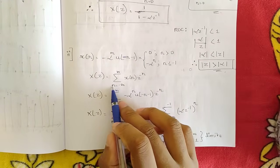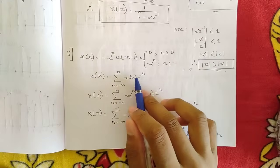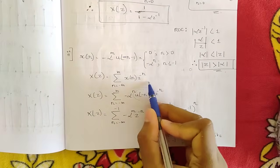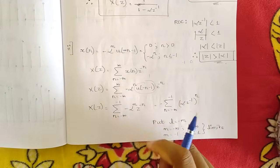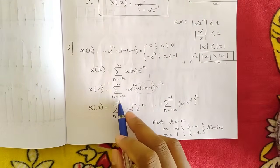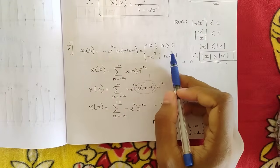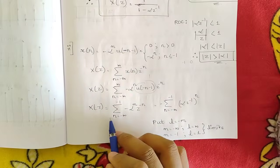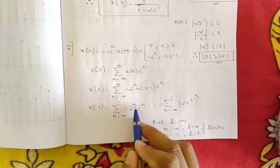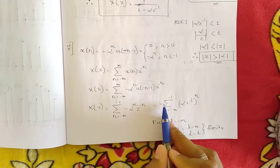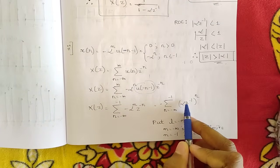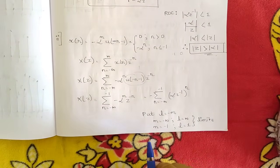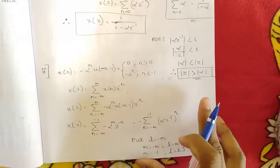X(z) = summation from n=−∞ to +∞ of x[n]·z^(−n). Substituting −α^n · u[−n−1], and since u[−n−1] = 1 in the valid range, the limits restrict to n = −∞ to −1: X(z) = summation from n=−∞ to −1 of −α^n · z^(−n). Taking −1 and combining terms gives −(α·z^(−1))^n.